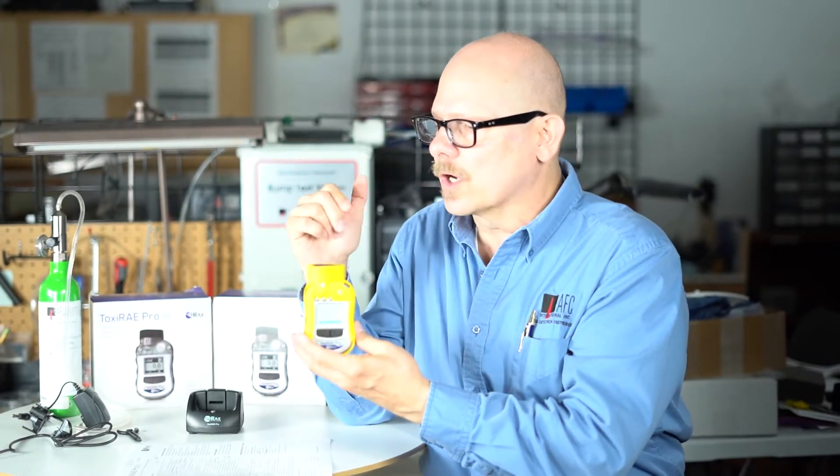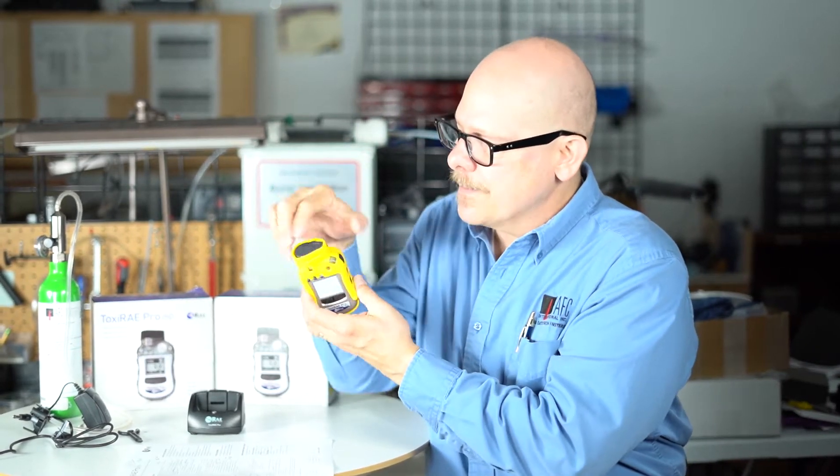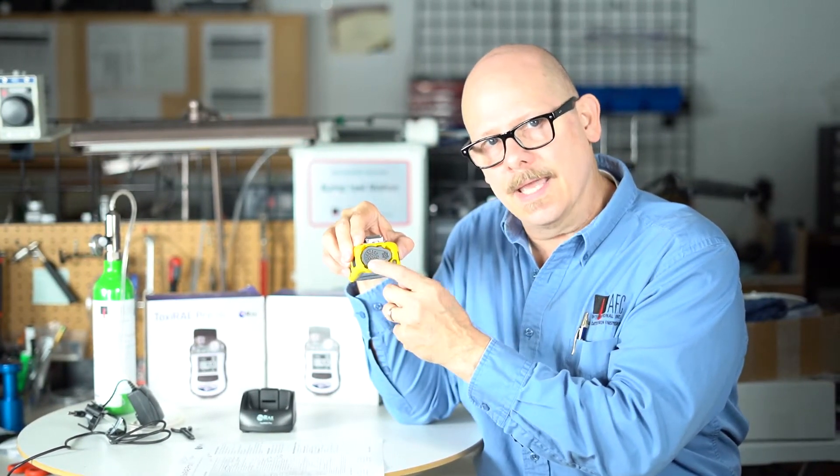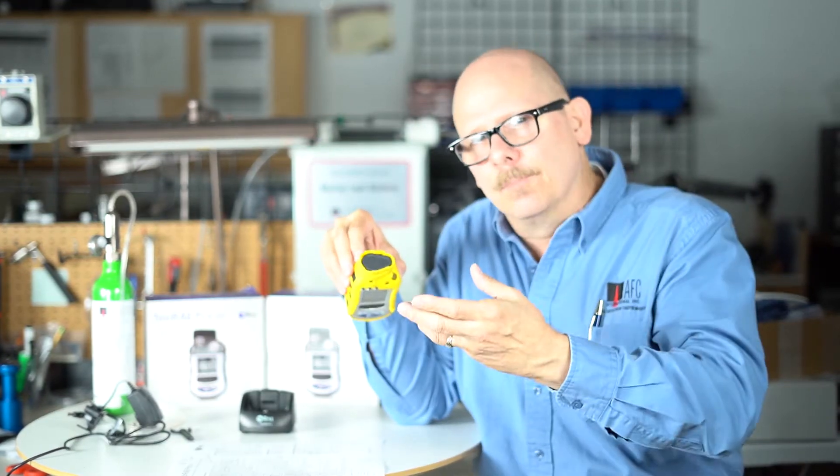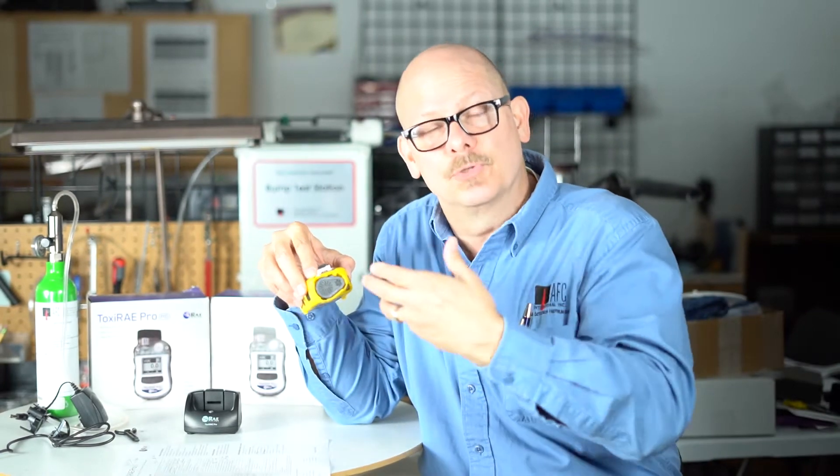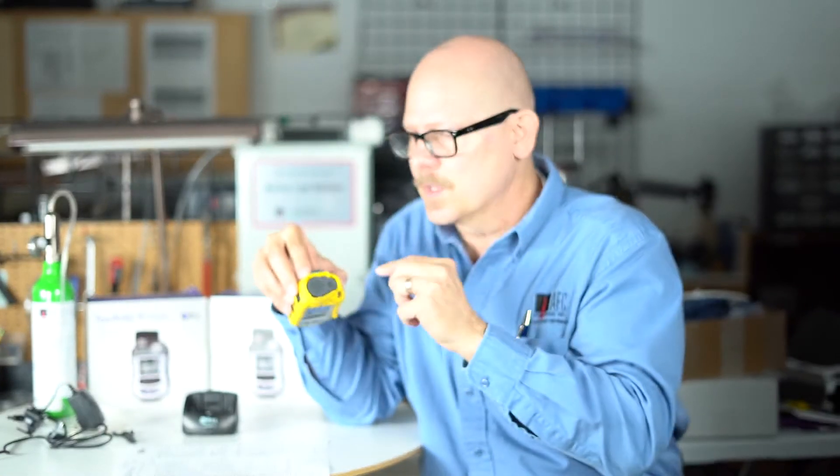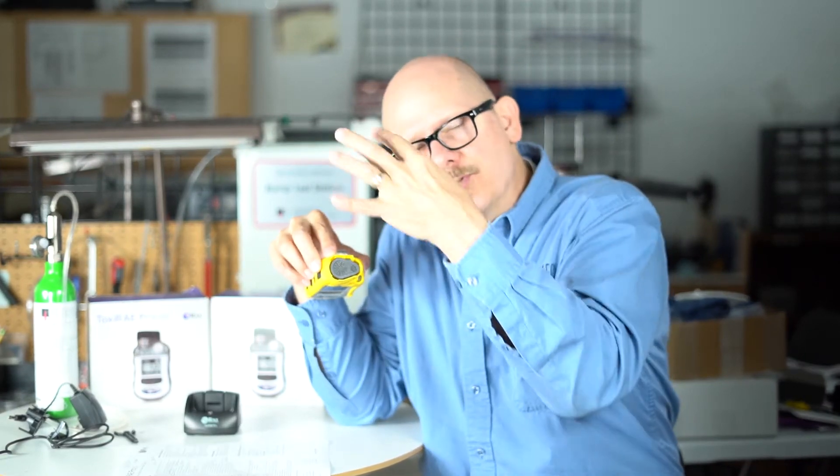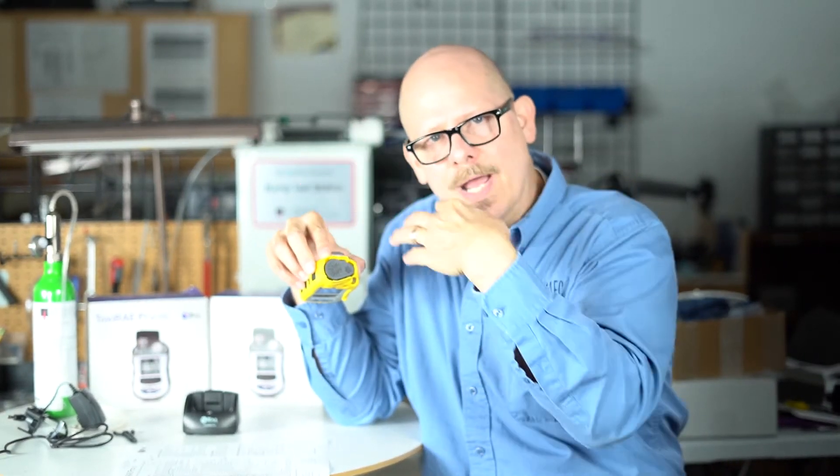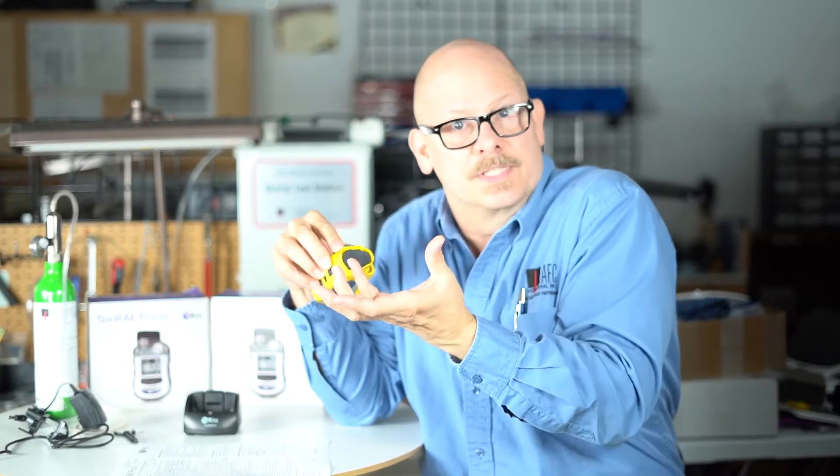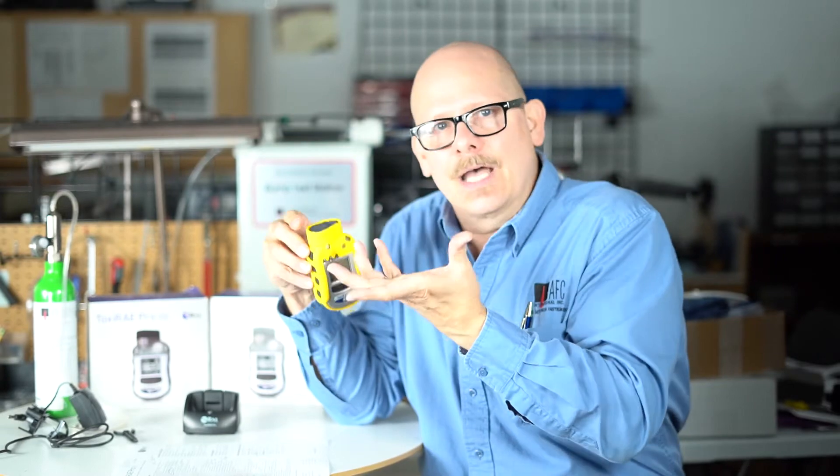How does this thing work? Inside, underneath this cap here, we have either a 10.6 or a 9.8 lamp. And instead of having a sample pump, like most of your Ray systems, MiniRay 3000s and MiniRay 2000s had a pump to pull the sample across that sensor. Instead of a pump, there's a little micro fan, and that little micro fan pulls the air and the sample around where the worker is and brings it into that ionization chamber or the detector and the sensor.